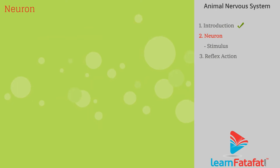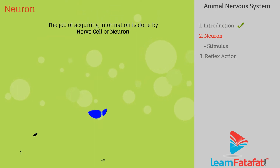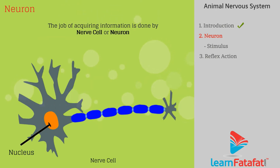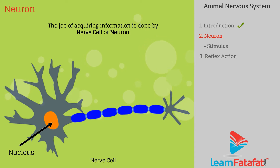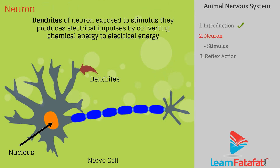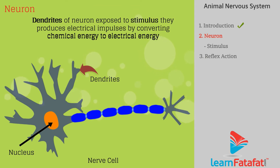The job of acquiring information is done by the nerve cell or neuron. When the dendrites of a neuron are exposed to a stimulus, they produce electrical impulses by converting chemical energy to electrical energy.